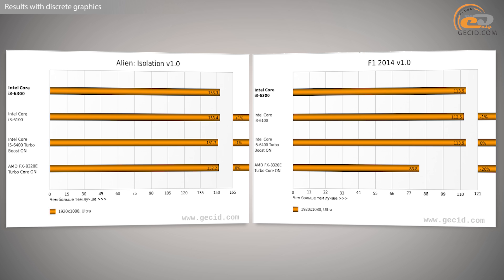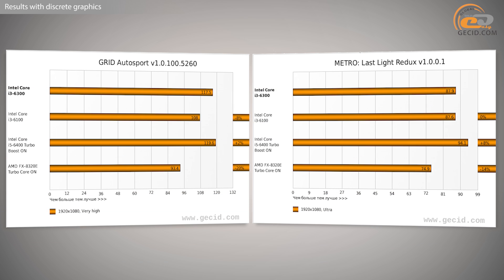After all, by paying just $30 more, you can already get a 4-core i5-6400, which is ahead of the i3-6300 by about 10%. In short, the tested solution does not look like the most optimal choice compared to the nearest neighbors in the product line.